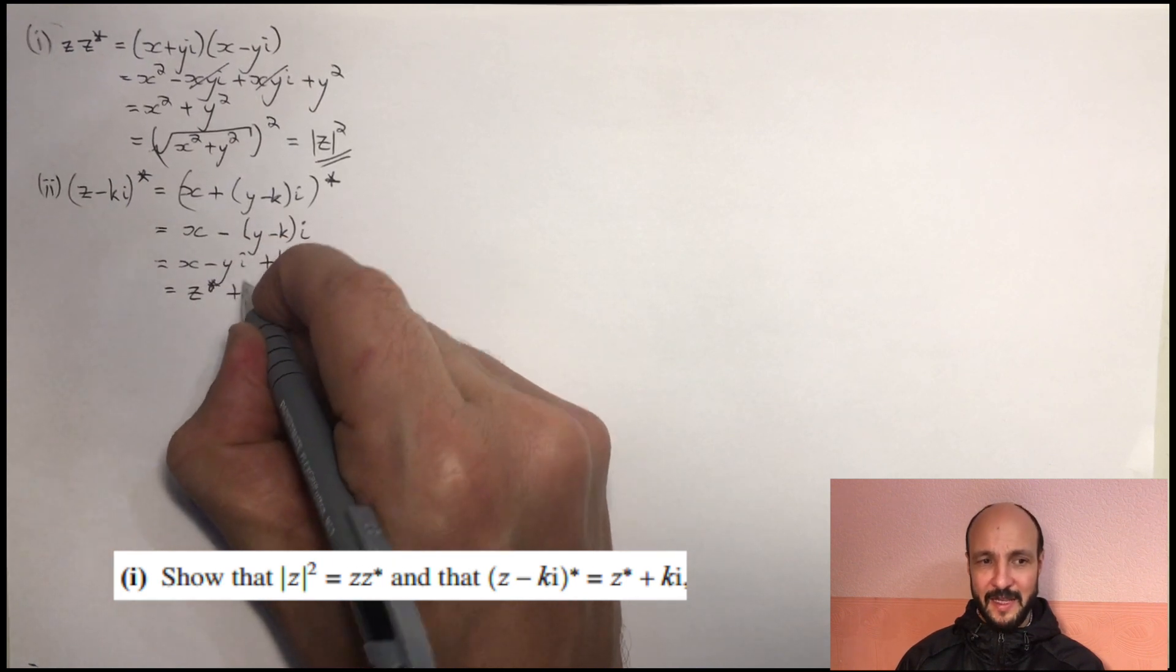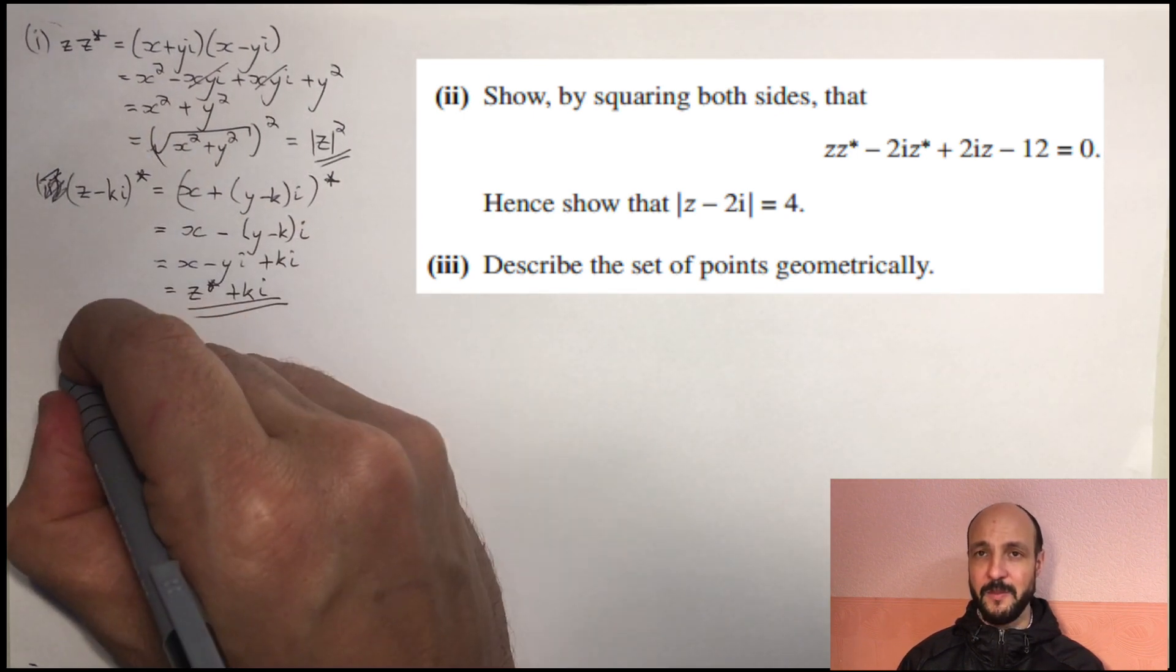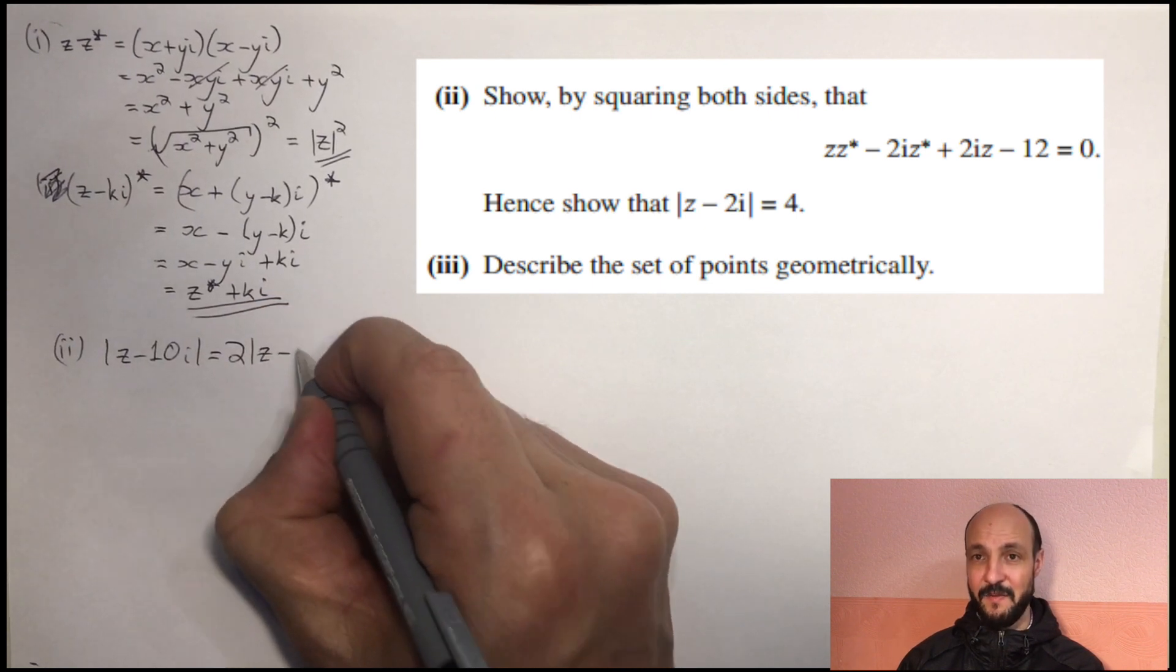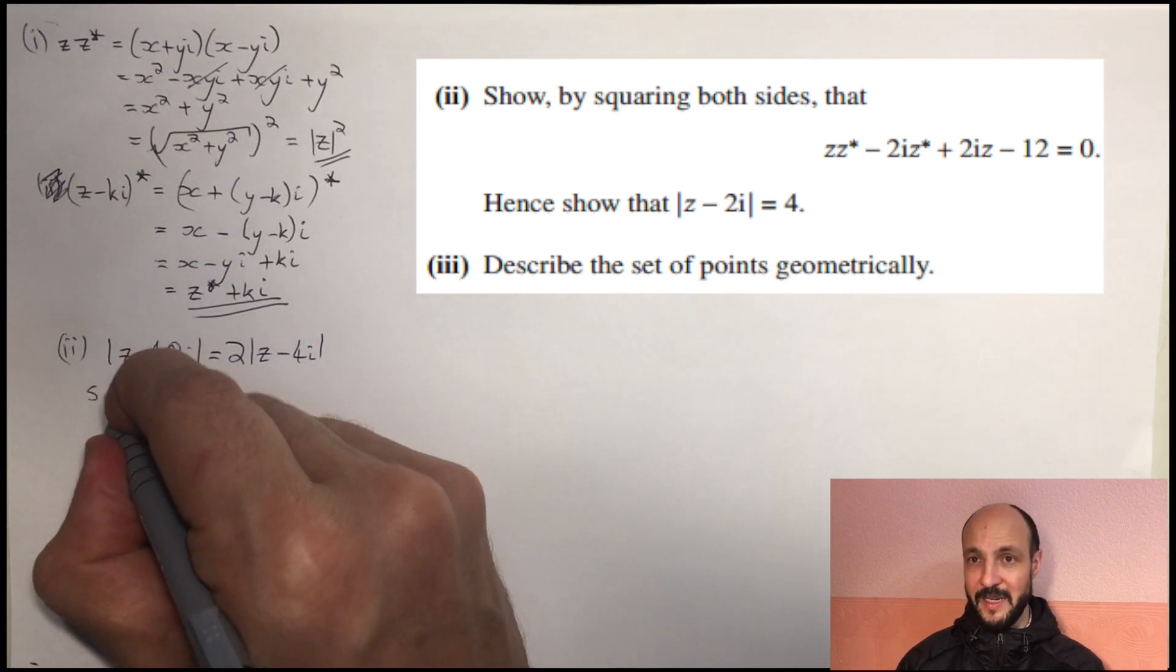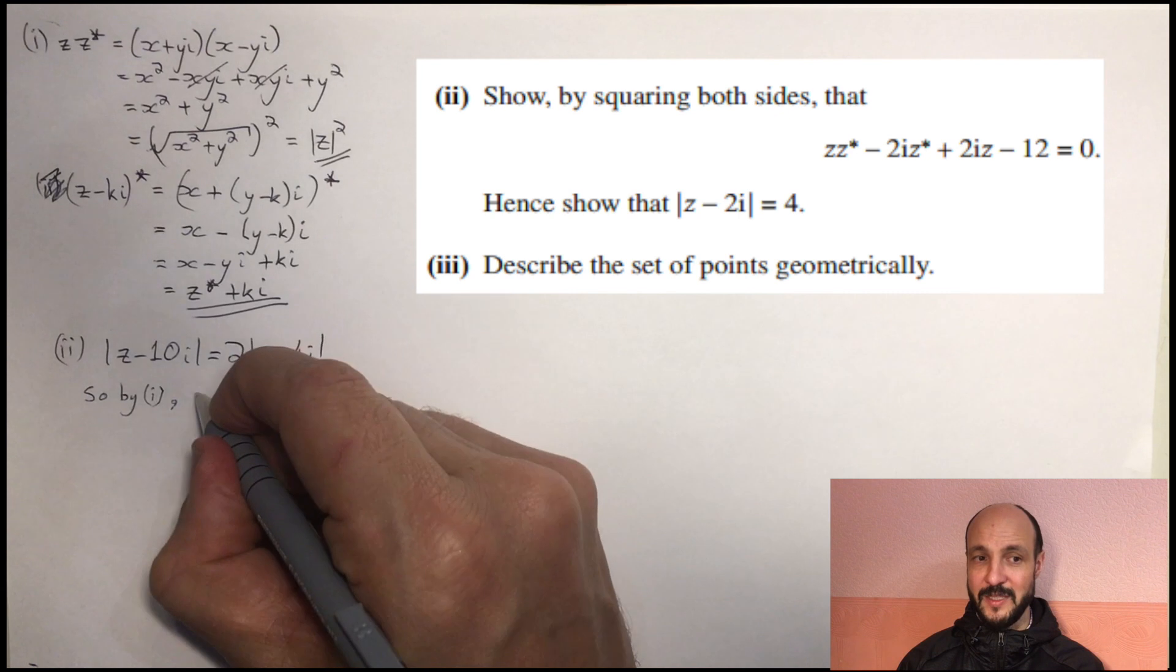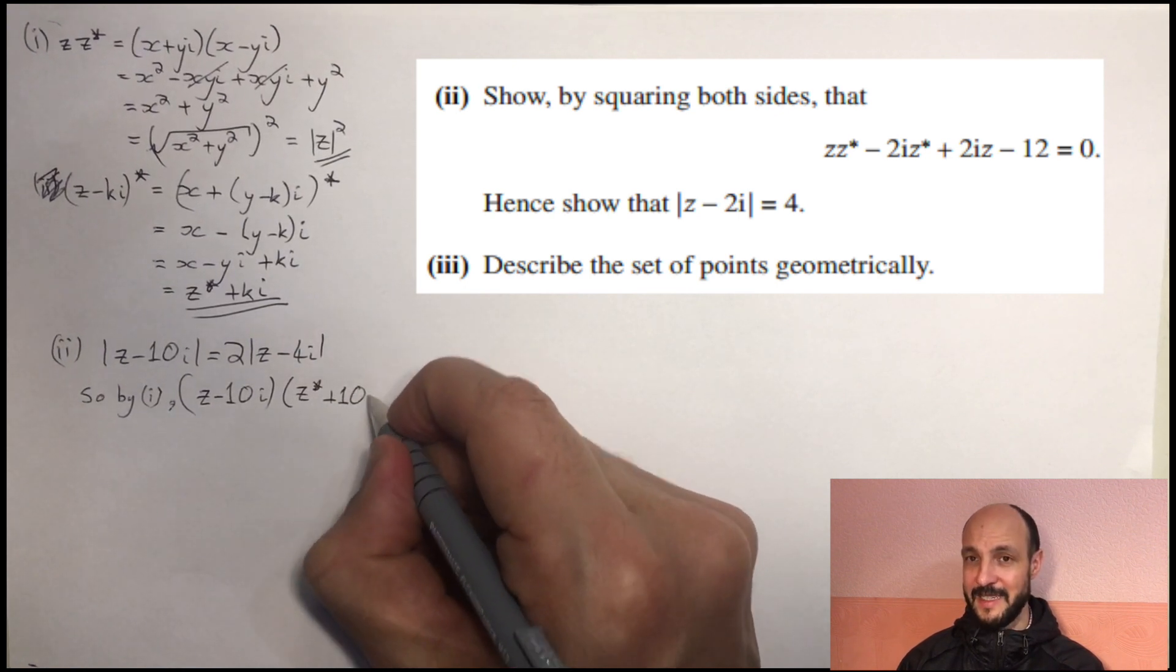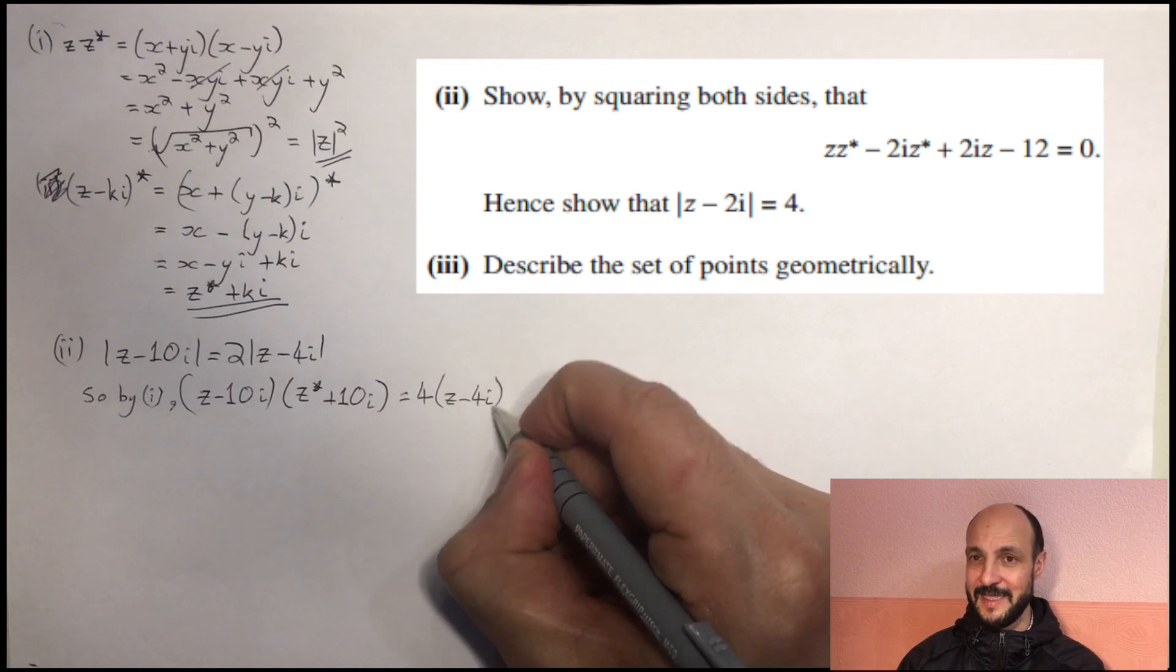So in the second part, we're given an initial equation, mod of z minus 10i equals 2 times mod of z minus 4i, and we're shown how they want it to be. And how they want it to be is all with zs and z stars. So if possible, we should stick with zs and not convert to x plus yi's and convert it into that form. So, and they tell us to do it by squaring. So if we start off by squaring our z minus 10i, we can use the first part of part 1 there that tells us mod z squared equals zz star. So on our left-hand side, if we square it, it will be the same as z minus 10i times by z star plus 10i. And on the right-hand side, 2 squared is 4, and the mod of z minus 4i squared will be z minus 4i times by z star plus 4i.